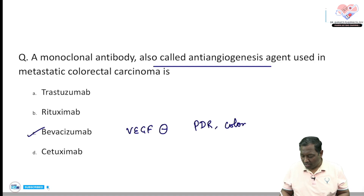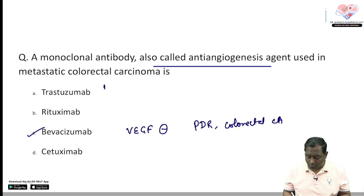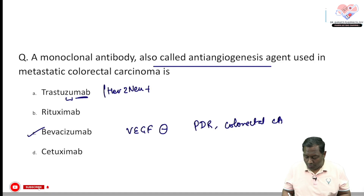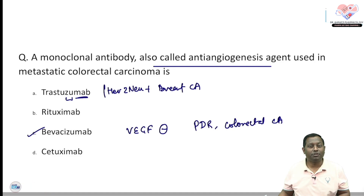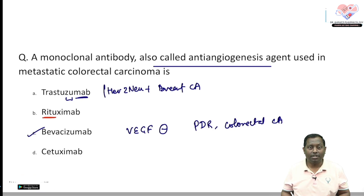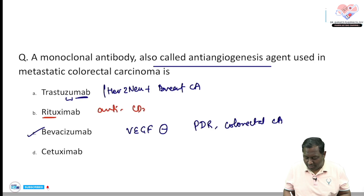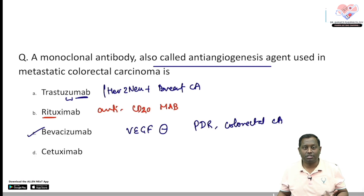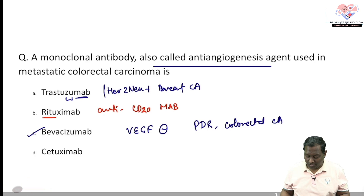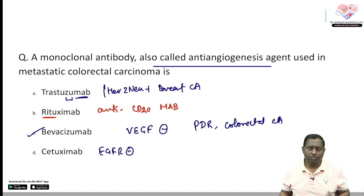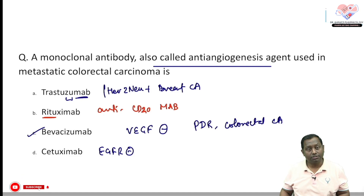These are all VEGF (vascular endothelial growth factor) inhibitors, which can be utilized in proliferative diabetic retinopathy and colorectal carcinoma. Trastuzumab and pertuzumab are humanized monoclonal antibodies used for HER2-positive breast cancer. Rituximab and ofatumumab are anti-CD20 monoclonal antibodies — using the mnemonic 'Ritu was young, 20 years old.' Cetuximab is an EGFR inhibitor used in head and neck carcinoma.